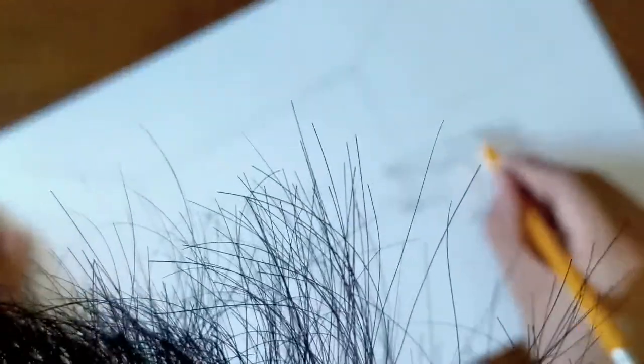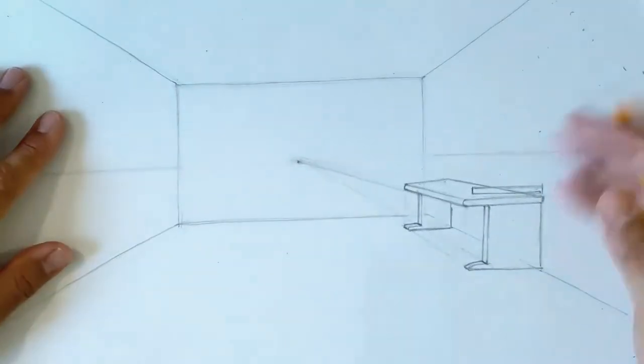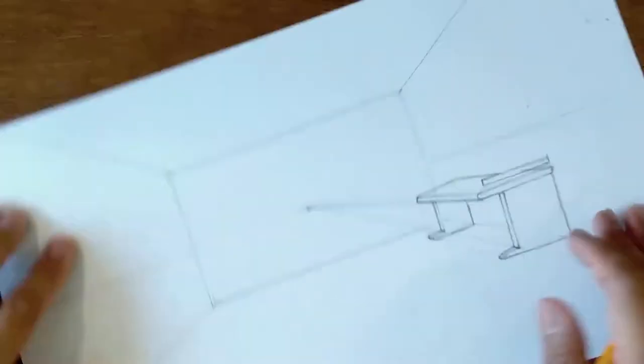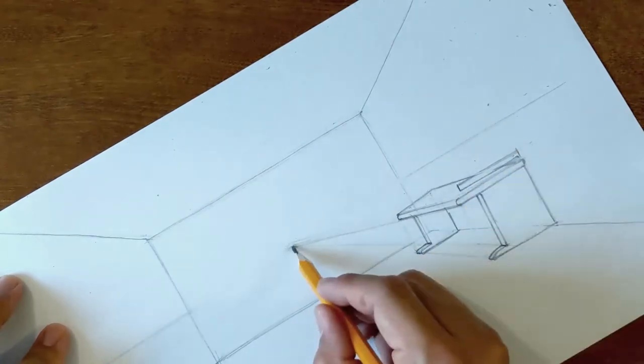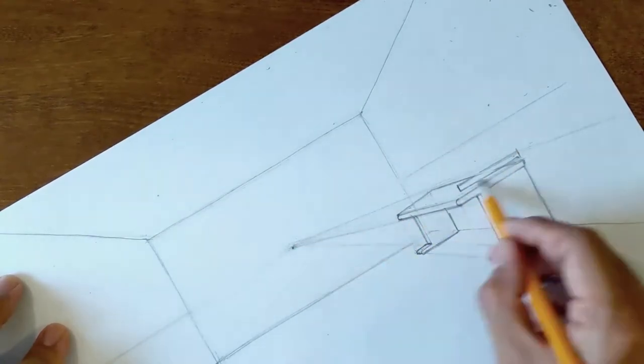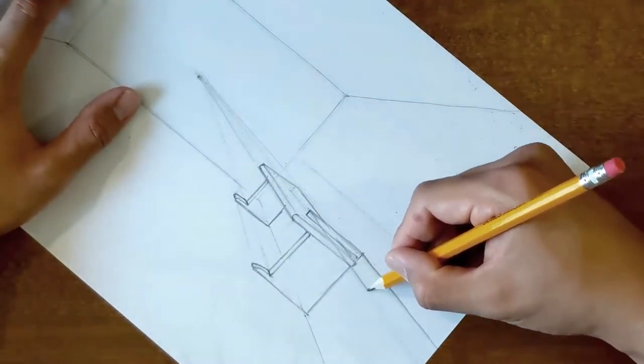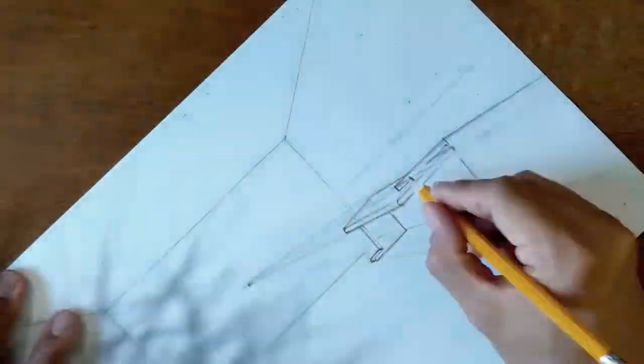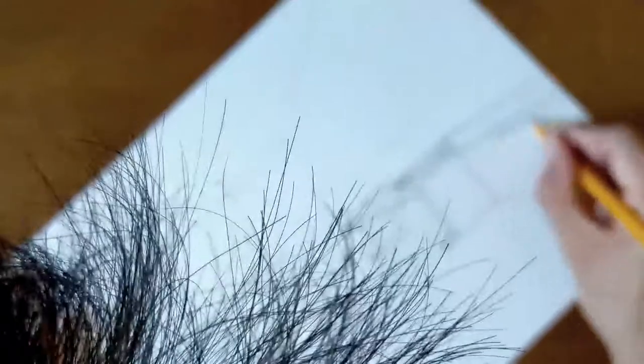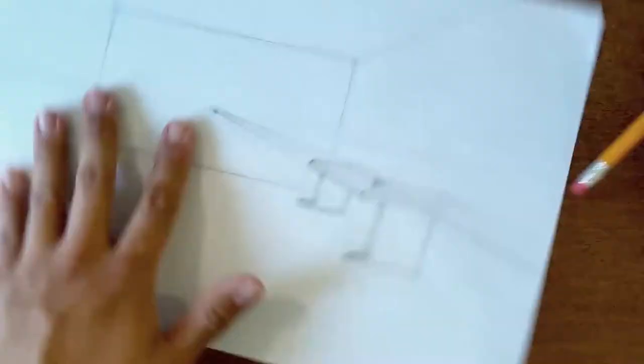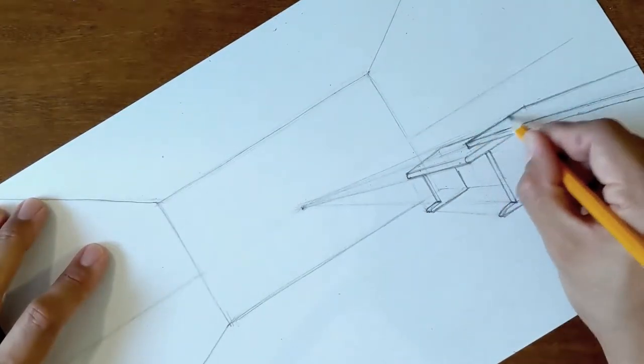So I'm leaving the first table as is and I'm adding a second one. The second one happens to be in front of that, so that means I'm going to have to do some erasing of the work I've already done. It's a good idea to start with the elements that are closest towards you when it comes to a perspective drawing.